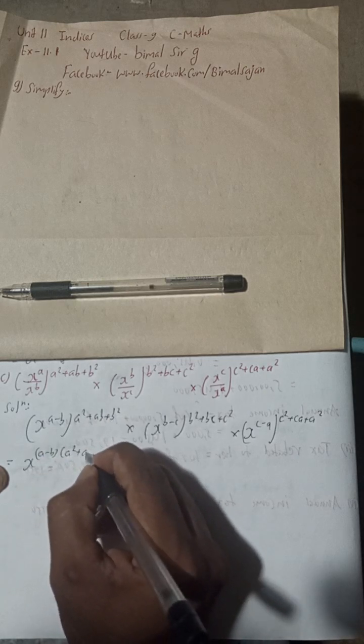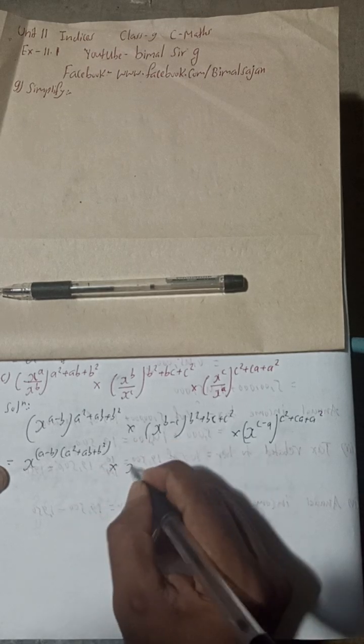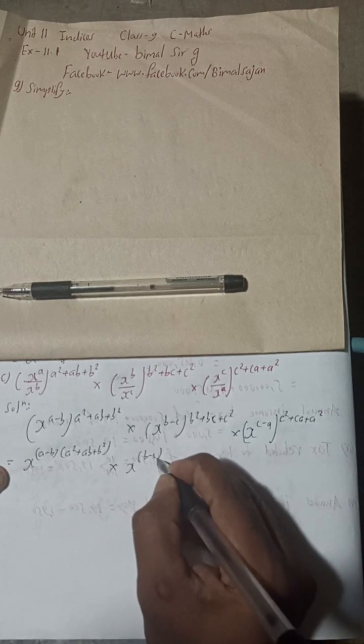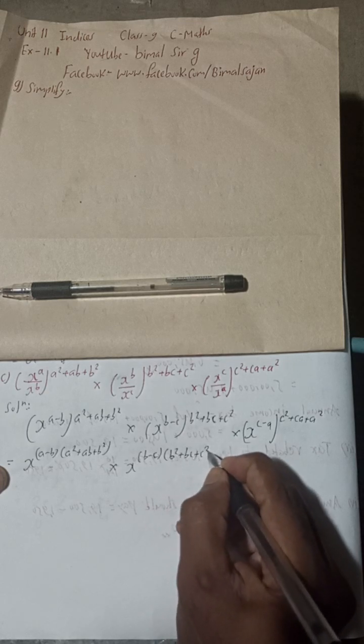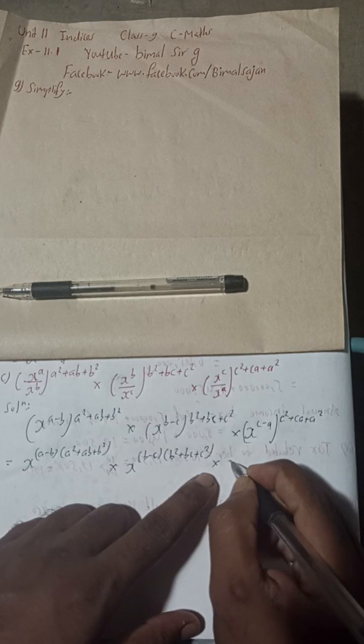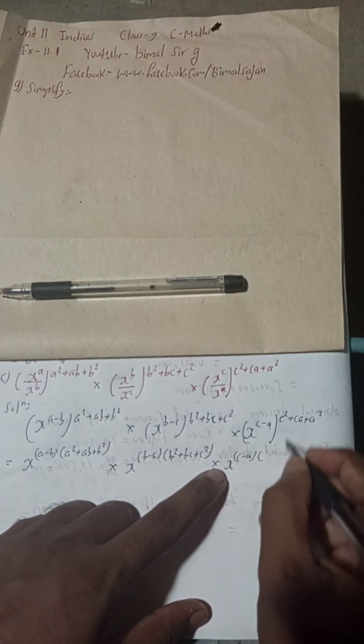And this separately, a² + ab + b² into this is x^(b - c) into here is b² + bc + c² into x to the power here is (c - a).